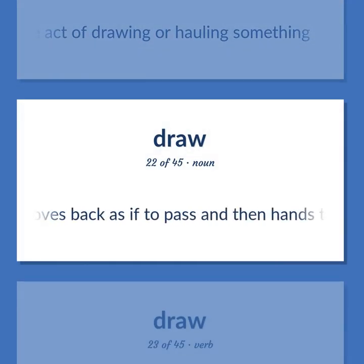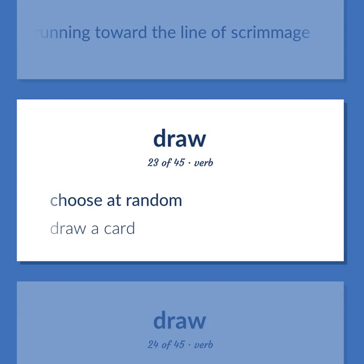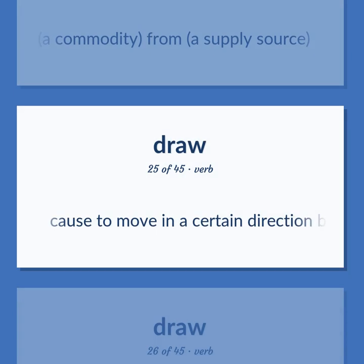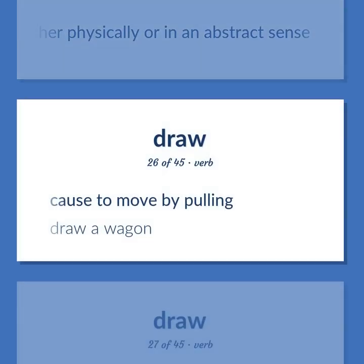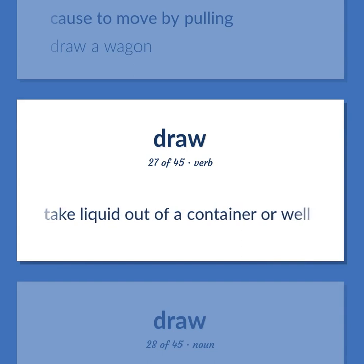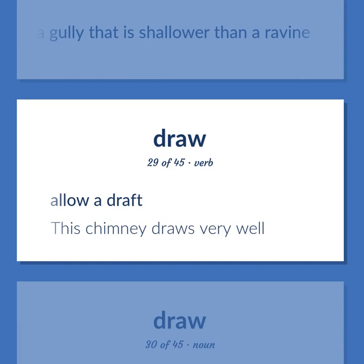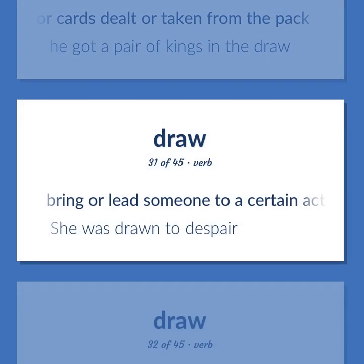American football: the quarterback moves back as if to pass and then hands the ball to the fullback who is running toward the line of scrimmage. Choose at random. Draw a card. Remove a commodity from a supply source. Choose to move in a certain direction by exerting a force upon, either physically or in an abstract sense. Choose to move by pulling. Draw a wagon. Take liquid out of a container or well. A gully that is shallower than a ravine. Allow a draft. This chimney draws very well. A playing card or cards dealt or taken from the pack. He got a pair of kings in the draw. Bring or lead someone to a certain action or condition. She was drawn to despair.